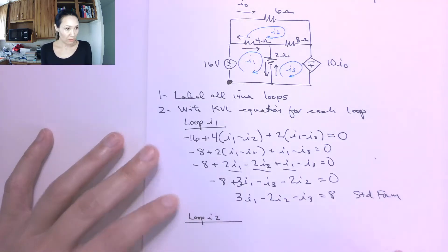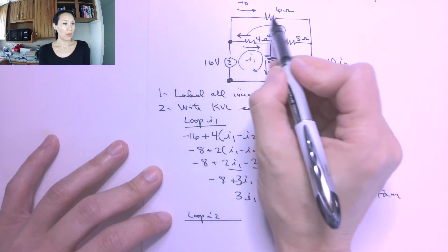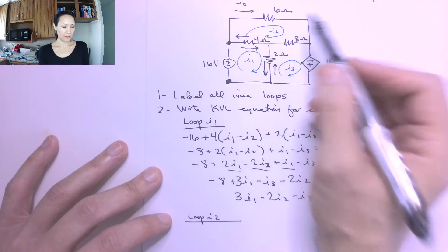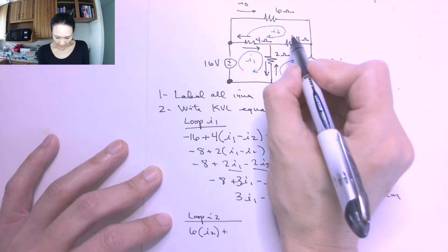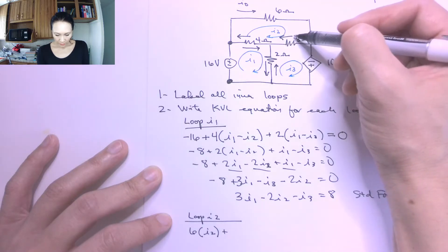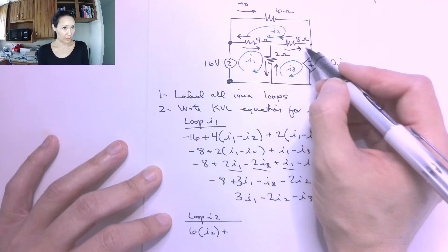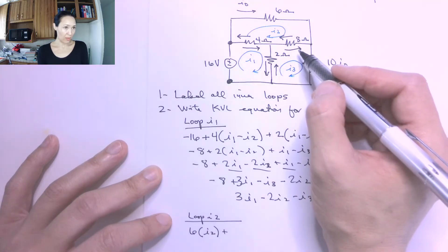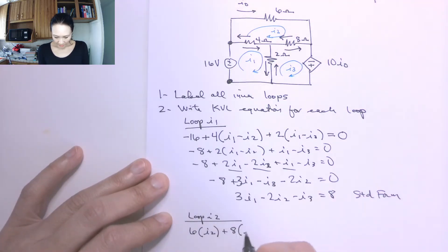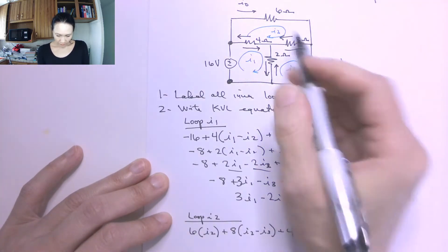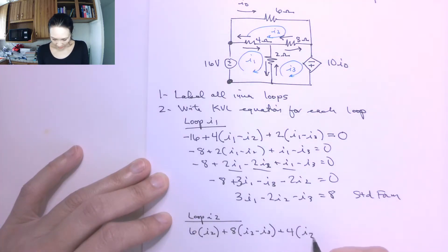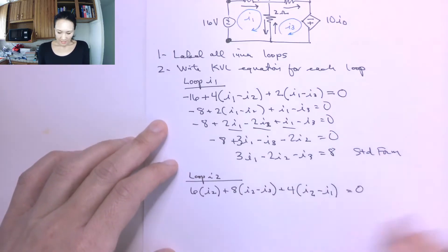The loop I2 equation: starting here and going around this I2 loop, the first thing I encounter is the 6 ohm resistor, giving 6 times I2. I continue and hit the 8 ohm resistor — I2 and I3 are going in opposite directions, so this is 8 times (I2 minus I3). I continue and hit the 4 ohm resistor, giving 4 times (I2 minus I1). Now I'm back to where I started, so I complete with equal to zero.